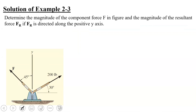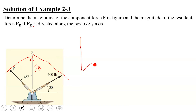We solve this using the parallelogram law — or equivalently, the triangle method. From the head of F, draw a line parallel to the 200-pound force. From the head of the 200-pound force, draw a line parallel to F. Where these two lines intersect gives the resultant force FR, which is directed along the positive y-axis. In this triangle: the 200-pound force has known magnitude, F is unknown, and FR is unknown.